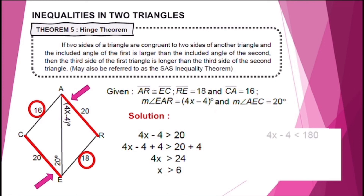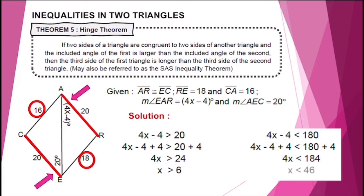For the second inequality, since the angle must be valid, we solve 4X − 4 < 180. Adding 4 to both sides gives 4X < 184. Dividing both sides by 4 gives X < 46. Combining both inequalities, we have X > 6 and X < 46.